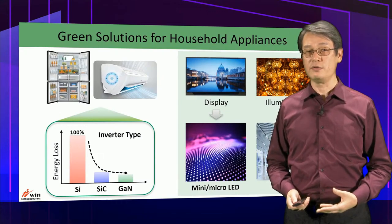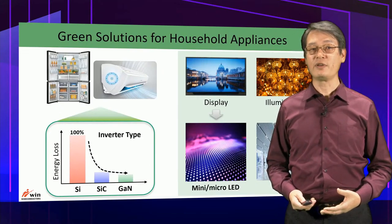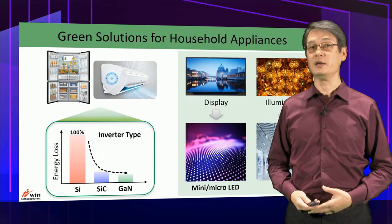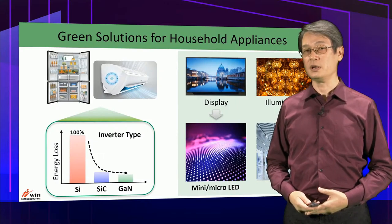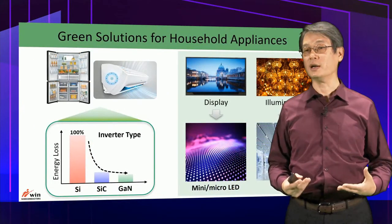Refrigerators, air conditioners, TVs, and illumination are the top four most energy-consuming household appliances, collectively consuming around 50% of household electricity. Compound semiconductor devices help greatly reduce energy loss. For example, using compound semiconductor power inverters, energy loss can be reduced by more than 80% for refrigerators and air conditioners. LED reduces electricity consumption as a backlight for TVs and as a replacement for conventional incandescent lamps. Together with electric vehicles and data centers, using compound semiconductor devices could save the equivalent of tens of nuclear power plants worldwide — an incredible amount of energy.